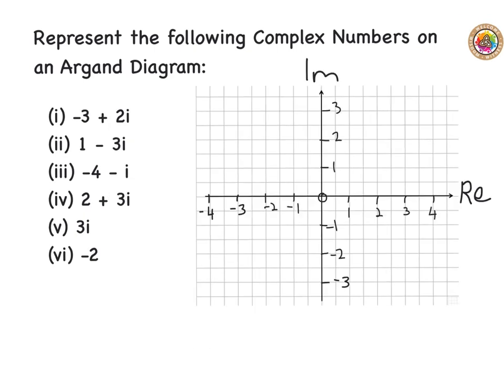We take the first point: minus three plus two i. I go to minus three on the real axis and up to two on the imaginary axis, and there we go — I have minus three plus two i plotted right here. I'm going to mark that off and label it minus three plus two i.